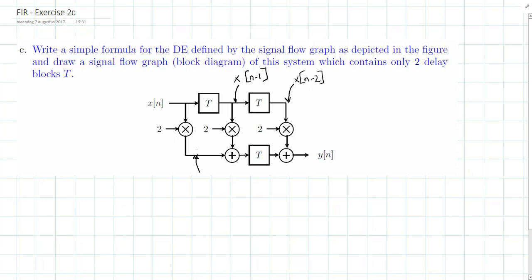The signal over here will be equal to 2 times x[n]. The signal over here will be equal to 2 times x[n].